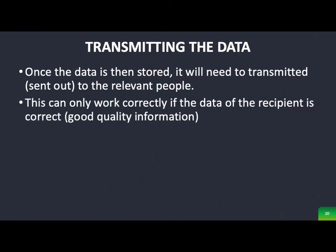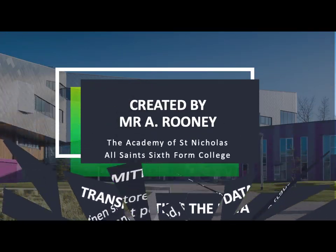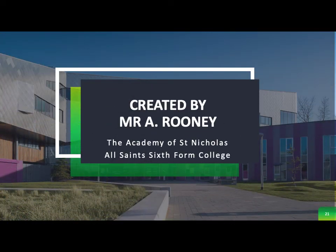The last part is transmitting the data — how can we send or share that information to the relevant people? This comes down to having good quality information. If I am sending out a school report, I need to make sure I'm sending it to the correct family. If I send it to the wrong family, that is poor quality information. And that is the end of unit two learning outcome two.